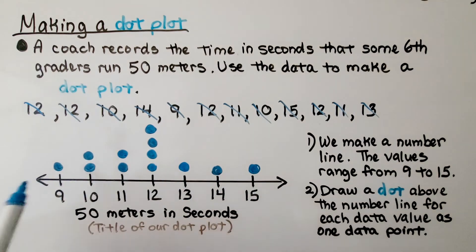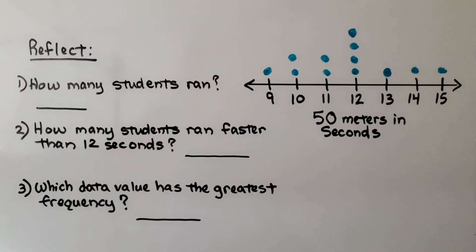This is our dot plot for the students who ran 50 meters in these seconds. We have the title of our dot plot underneath the number line. Now that we have our dot plot completed, we can reflect on the information.